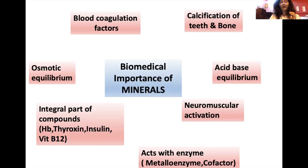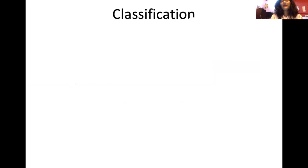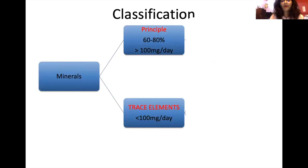Minerals differ in their dietary requirements. We classify them based on requirement per day. Principal minerals require more than 100 mg per day in the diet. Trace elements, on the other hand, are required in micro quantities — less than 100 mg per day.